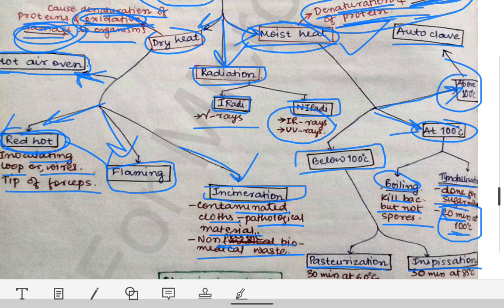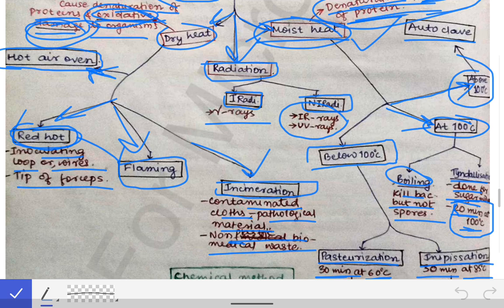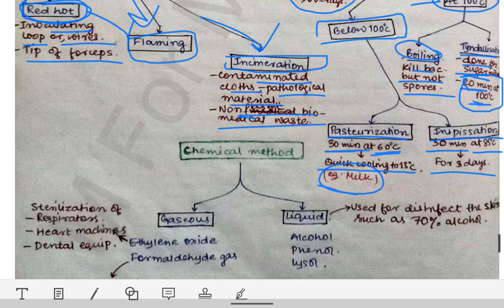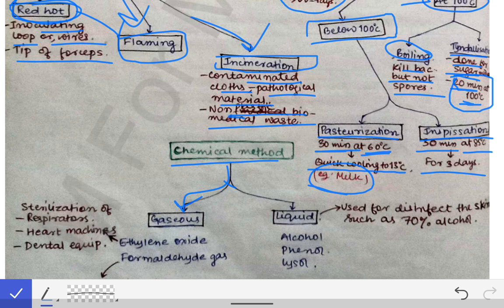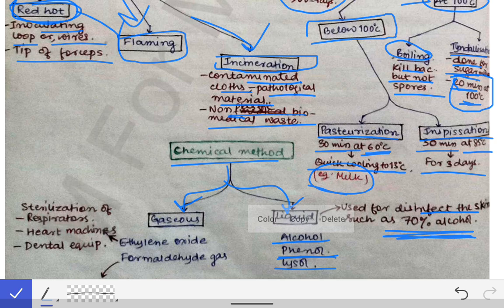Among all these methods, some like the hot air oven and autoclave are asked individually in exams and will be discussed separately. Coming to chemical methods, which are relatively straightforward: in liquid chemicals we have alcohol, phenol, and lysol, which are used for disinfection of the skin. We use 70% alcohol for this purpose.